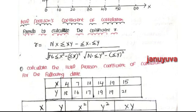Now let's see Karl Pearson's Coefficient of Correlation. This is a Part B, 16-mark question. First, memorize the formula: r equals n into summation xy minus summation x into summation y, divided by the square root of n into summation x squared minus summation x whole squared, multiplied by n into summation y squared minus summation y whole squared.